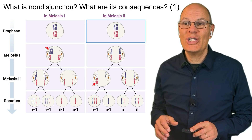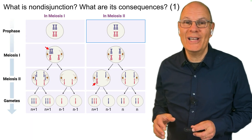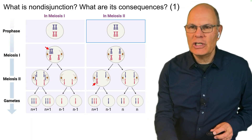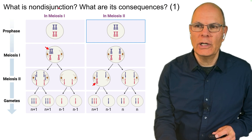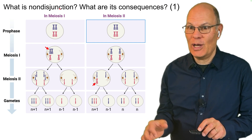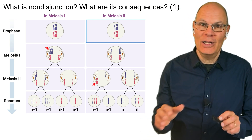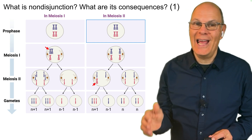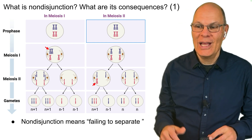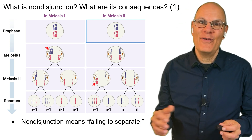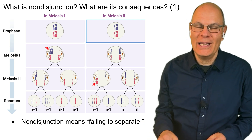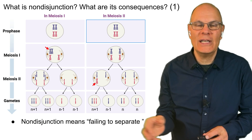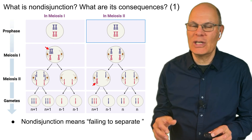What is nondisjunction and what are its consequences? Nondisjunction is kind of a cool word. A junction is where things come together; a disjunction would be things coming apart. And nondisjunction means things failing to separate — it's when the homologous pairs or the sister chromatids don't separate during meiosis.